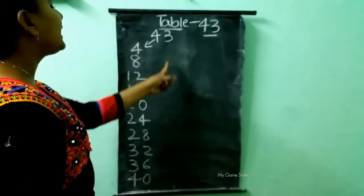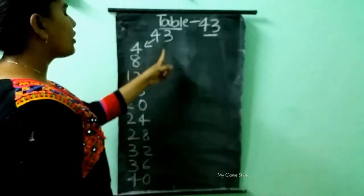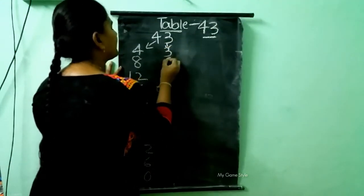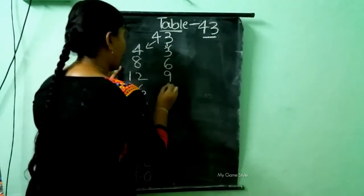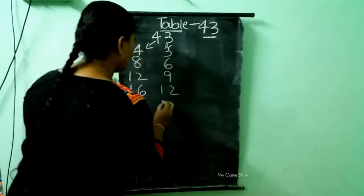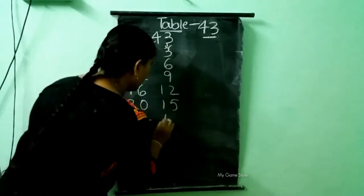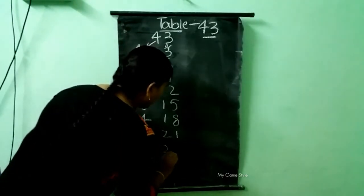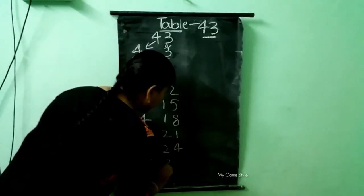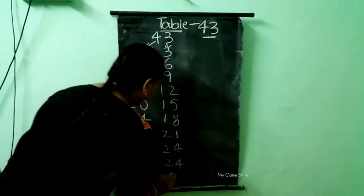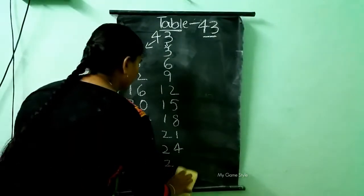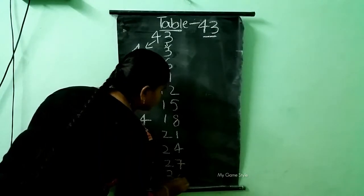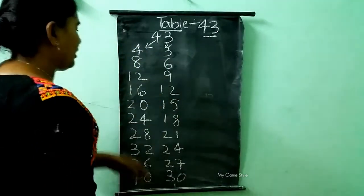And here is the 3 table. Here 3 is there, so we need to write the 3 table children: 3, 6, 9, 12, 15, 18, 21, 24, 27, 30. This is the 3 table.